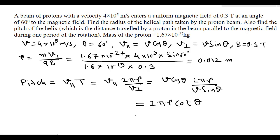Putting in the values r = 0.012 meter and θ = 60 degrees, we get the pitch = 0.044 meter. So the radius of the helix is 0.012 meter and the pitch of the helix is 0.044 meter.